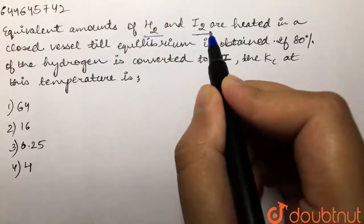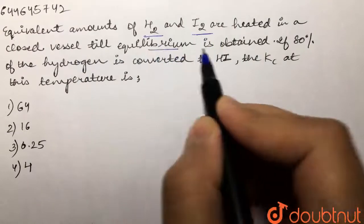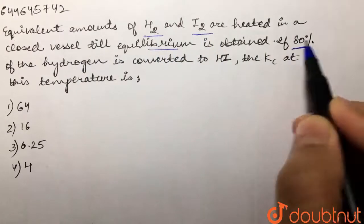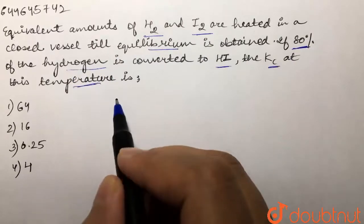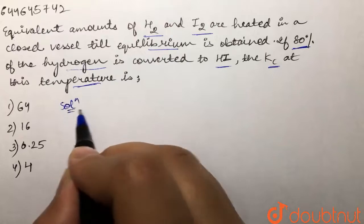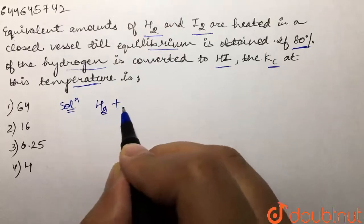If 80% of the hydrogen is converted to HI, the Kc at this temperature is what? We are given this equation: hydrogen is reacting with iodine to form 2HI.